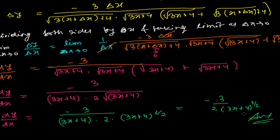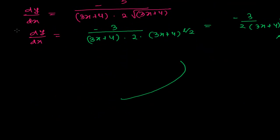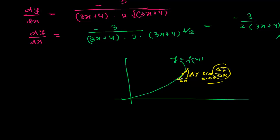To understand what the derivative actually means: if you have a curve y = f(x) and draw a tangent at a point, δy is the vertical change and δx is the horizontal change. The derivative dy/dx is the ratio of change in y to change in x as δx tends to zero — meaning at an infinitely small point, the secant becomes a tangent, and its slope is the derivative.